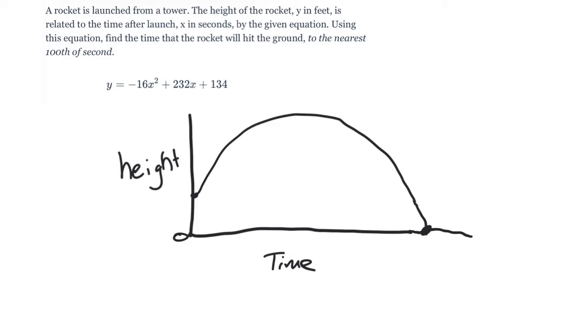All right. So simple way of doing this, we need to solve this quadratic. We're going to use the quadratic formula because that doesn't look like it's something I'm going to want to factor. So let's use the quadratic formula. We're going to say a is equal to negative 16, b would be equal to 232, and then c is going to equal 134.